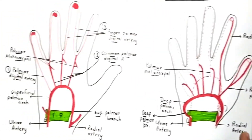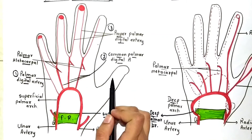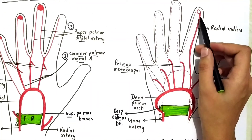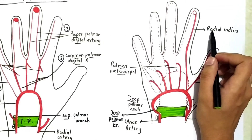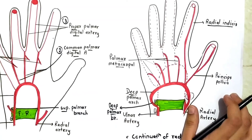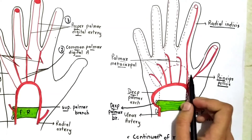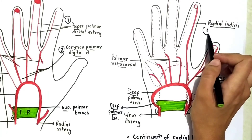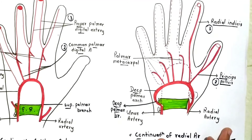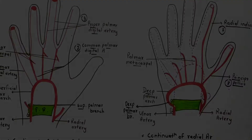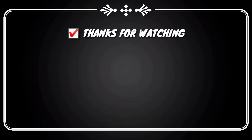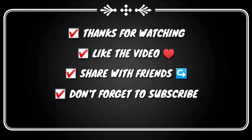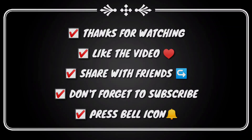The fingers remaining — half of the index finger and the whole thumb — are supplied by the deep palmar arch. It gives a branch for half of the index finger called the radialis indicis branch, and then the princeps pollicis branch, which divides into two and supplies the thumb. These are the two branches of the deep palmar arch. That covers the superficial and deep palmar arches. If you liked it, give it a thumbs up, share the video, subscribe, and press the bell icon.